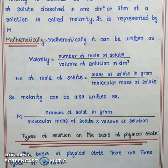Number of moles of solute equals mass of solute in grams divided by molecular mass of solute. So molarity can also be written as M equals mass of solute in grams divided by molar mass of solute, multiplied by volume of solution.